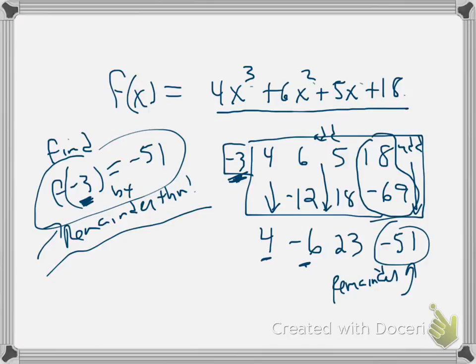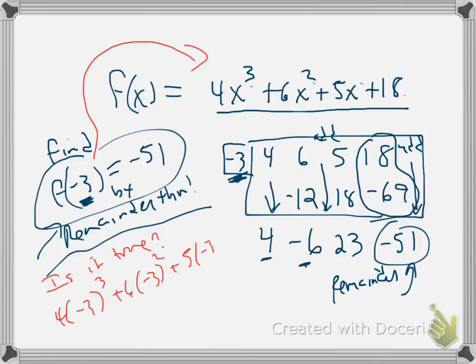I mean, you shouldn't have blind faith. Try it. Store negative 3 into the original. So note to self, is it true? I encourage you to take 4 times negative 3 and cube it, plus 6 times negative 3 and square it, plus 5 times negative 3, plus 18. Investigate. Does that come to be negative 51?